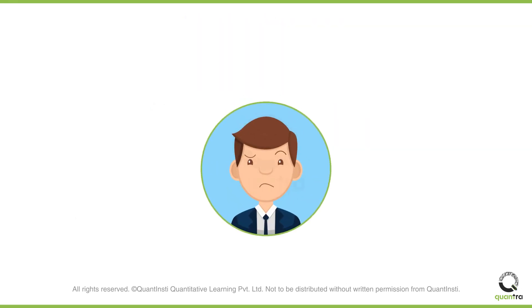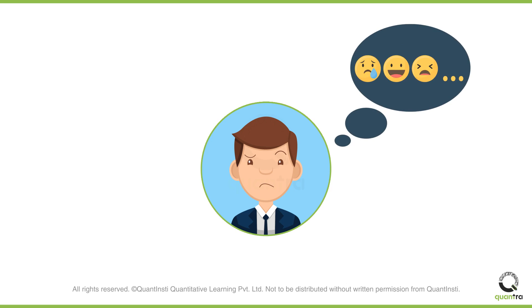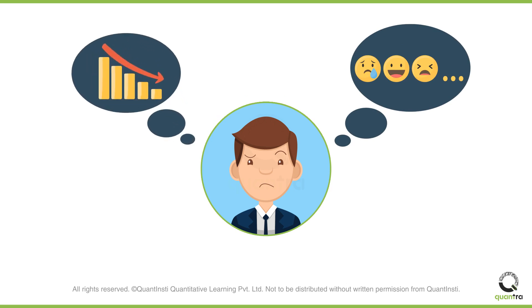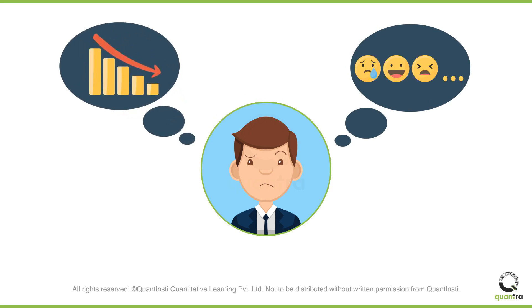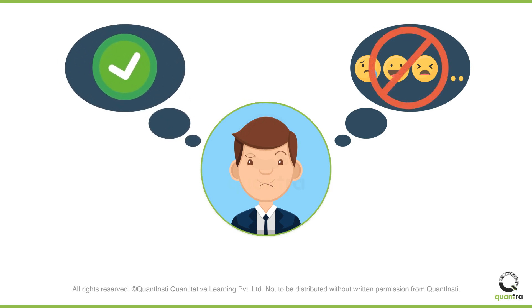Most traders often make this very same mistake. They make trading decisions based on emotions, in hope of making huge profits quickly, and end up taking huge losses. However, in the long run, they realize an important insight — that their chances of getting better and consistent results improve when they do not rely on emotion, but use a proper systematic approach.